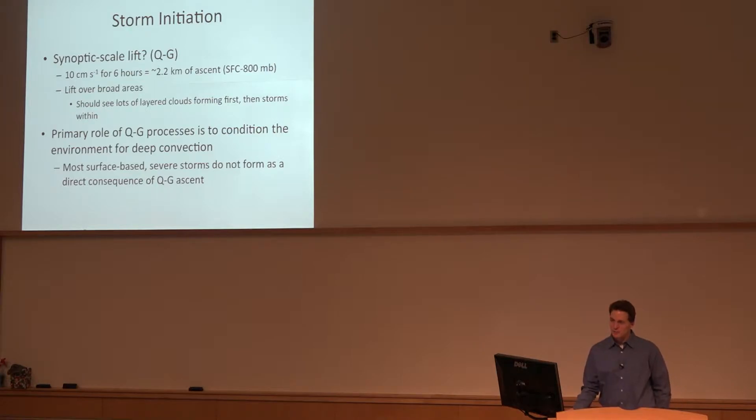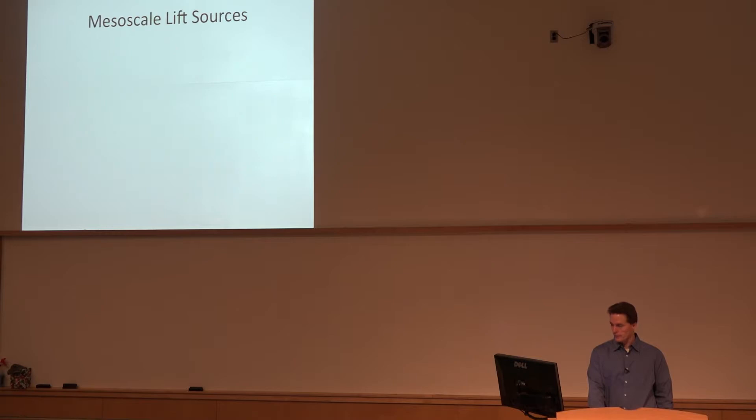So QG processes largely set up the environment for severe storm development and also the response to cyclogenesis with differential advection plays a big role. Most surface-based thunderstorms do not form as a direct consequence of QG ascent. So we have to look on the mesoscale for why we would get storms forming in small bands or at points.